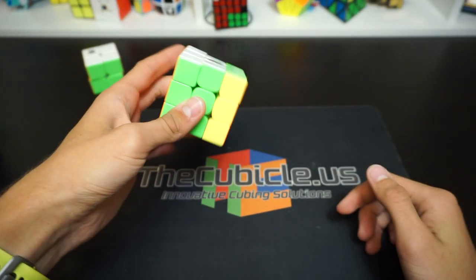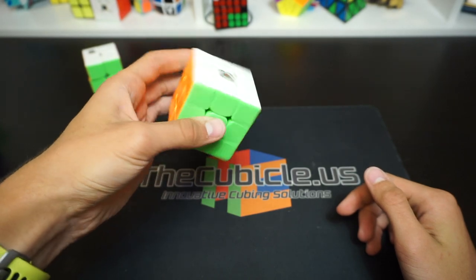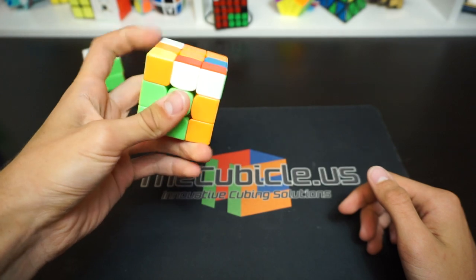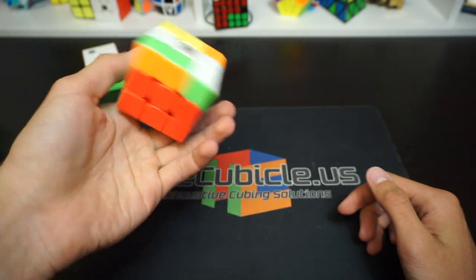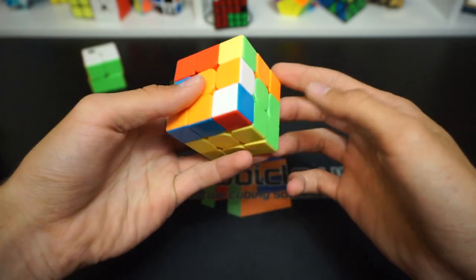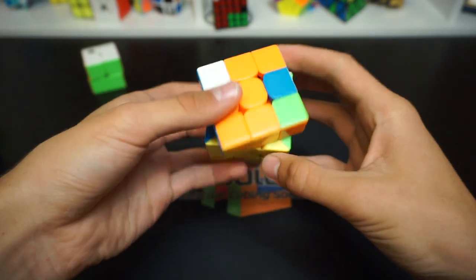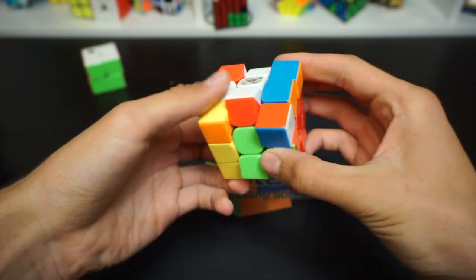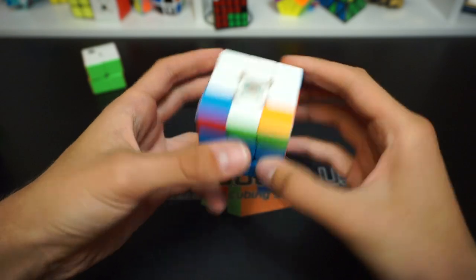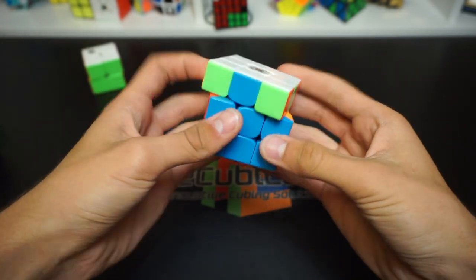Here is 3x3 one-handed. My goal is to get a PB average which is sub-22. As you can see, I don't know the U-perms well in one-handed, which seriously shows that I have practiced almost every day, and the reality is that I haven't done like any solves.